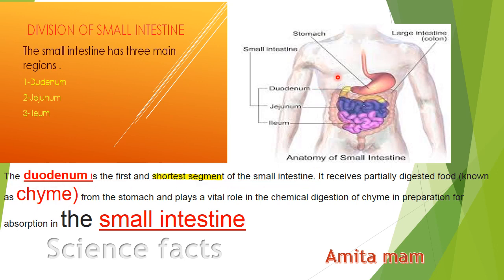The duodenum is the first and shortest segment of the small intestine. It receives partially digested food, known as chyme, from the stomach, and plays a vital role in the chemical digestion of chyme in preparation for absorption in the small intestine. This is the shortest segment, shown in your diagram. The partially digested food comes from the stomach — this partially digested food is known as chyme.